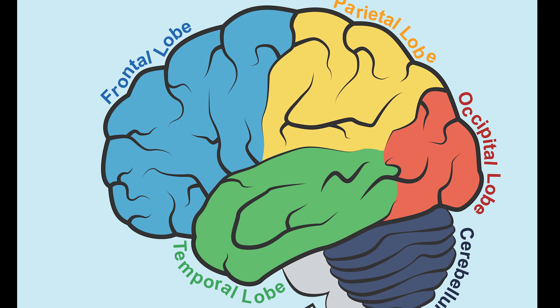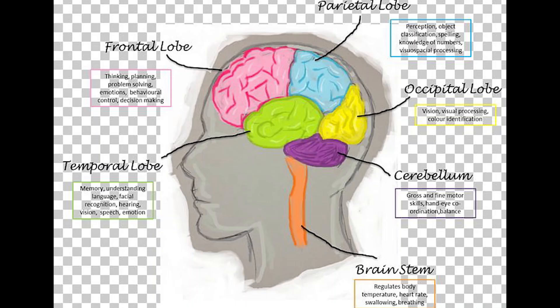In humans, the frontal lobe reaches full maturity only after the 20s. The prefrontal cortex in particular continues maturing till the second and third decades of life, which thereafter marks the cognitive maturity associated with adulthood. A small amount of atrophy, however, is normal in the aging person's frontal lobe.